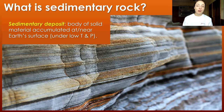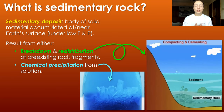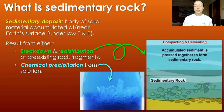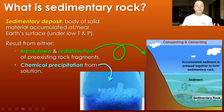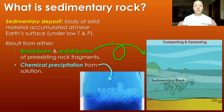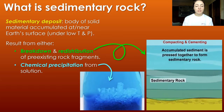A sedimentary deposit is a body of material accumulated at or near the earth's surface under the low temperature and pressure conditions characteristic of earth's surface, compared to beneath earth's surface like igneous and metamorphic rocks. In general, there are two major ways that rocks can form at earth's surface. The first is by the breakdown and redistribution of pre-existing rock fragments, and then compaction with burial and cementation.